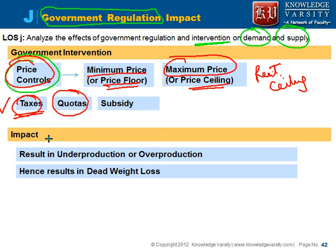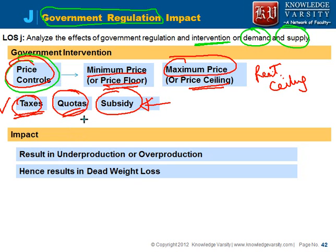Sometimes governments impose quotas on certain industries. For example, if you have 100 companies in your country, you might say that no company can produce more than 10 million units. That is a quota assigned to each company. Then you have subsidies — certain governments provide subsidies to farmers in the form of fertilizers and pesticides. Note that quotas and subsidies are not in the CFA curriculum, but we'll cover them briefly to understand why they result in dead weight loss.